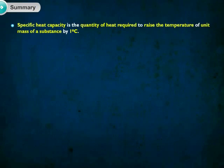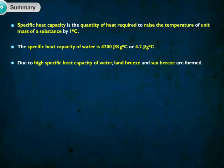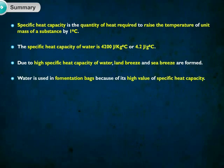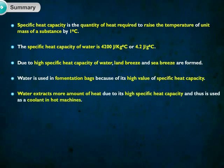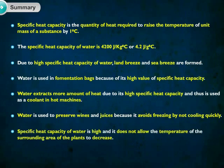Specific heat capacity is the quantity of heat required to raise the temperature of unit mass of a substance by 1 degree Celsius. The specific heat capacity of water is 4200 joule per kg degree Celsius or 4.2 joule per gram degree Celsius. Due to high specific heat capacity of water, land breeze and sea breeze are formed. Water is used in fermentation bags, as a coolant in hot machines, and to preserve wines and juices by avoiding freezing. High specific heat capacity of water also does not allow the temperature of the surrounding area of plants to decrease.